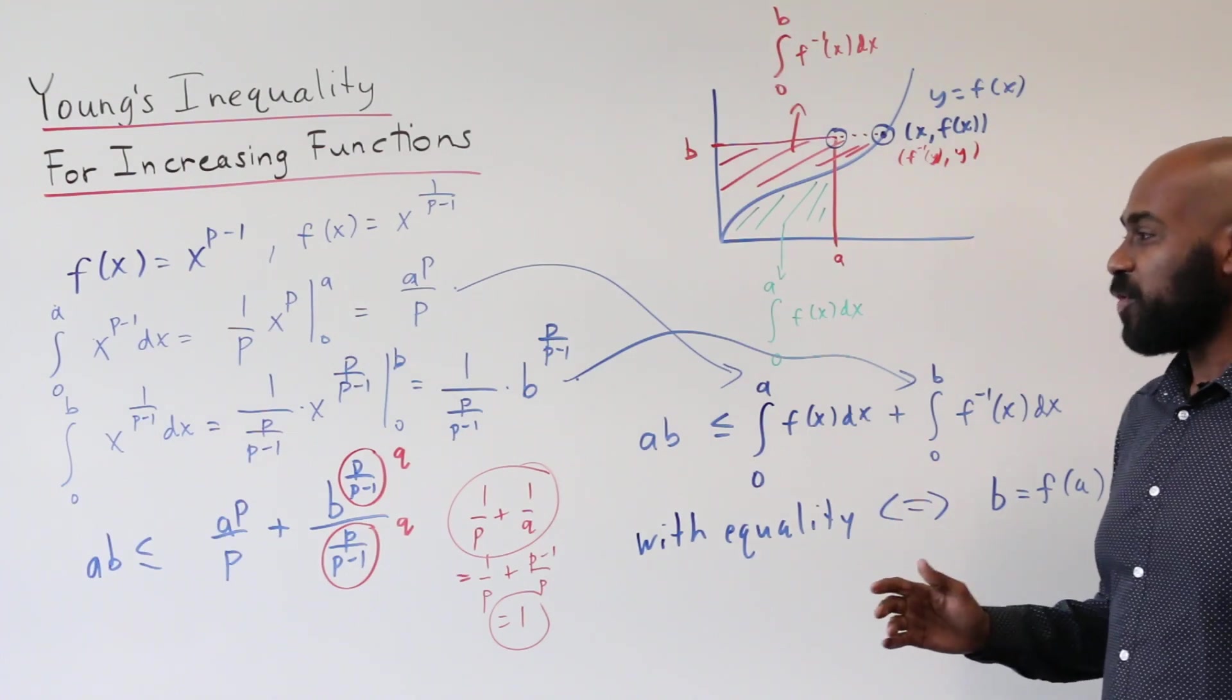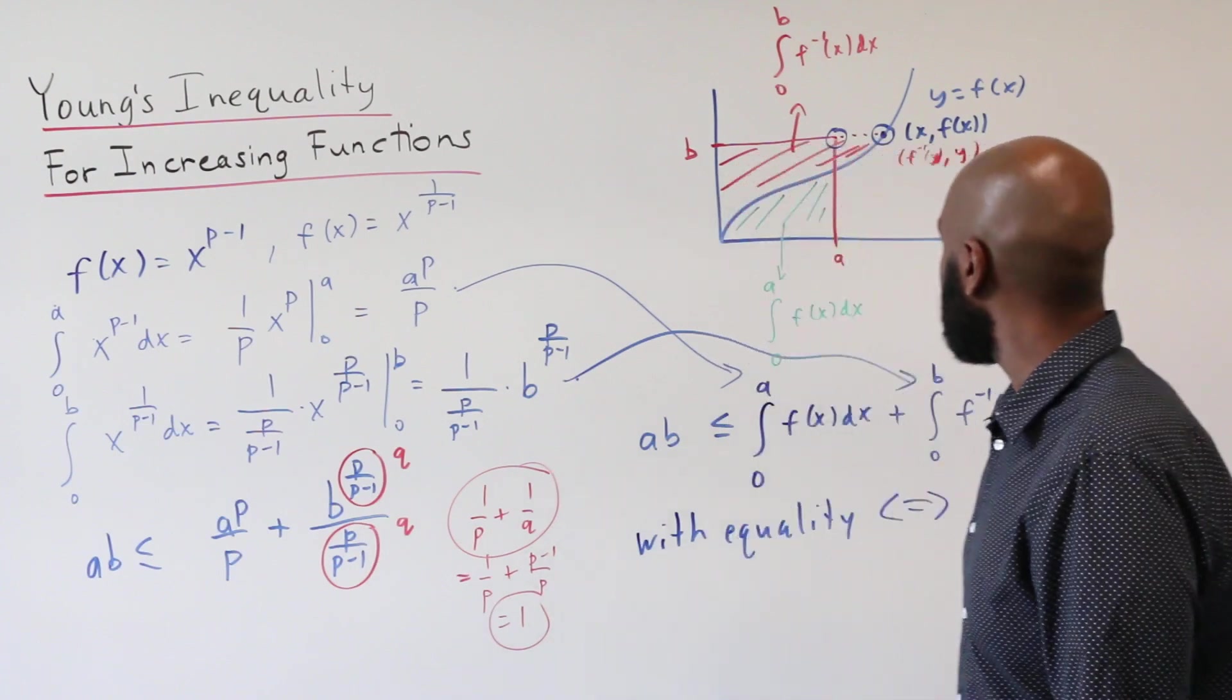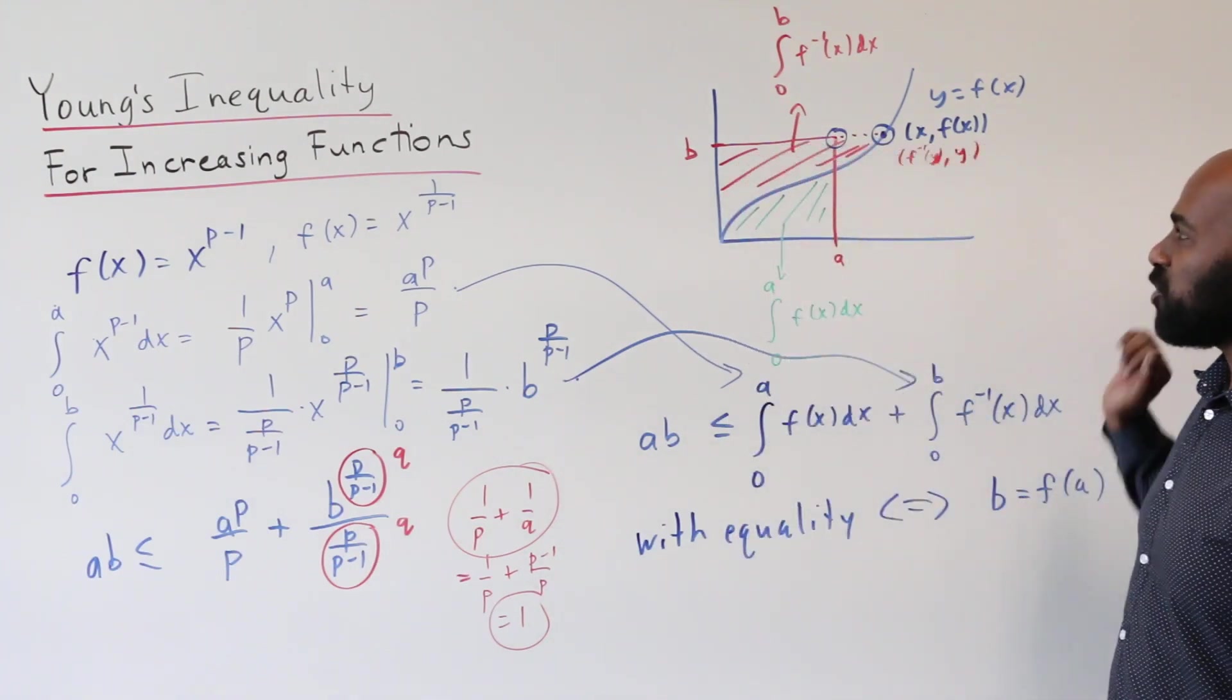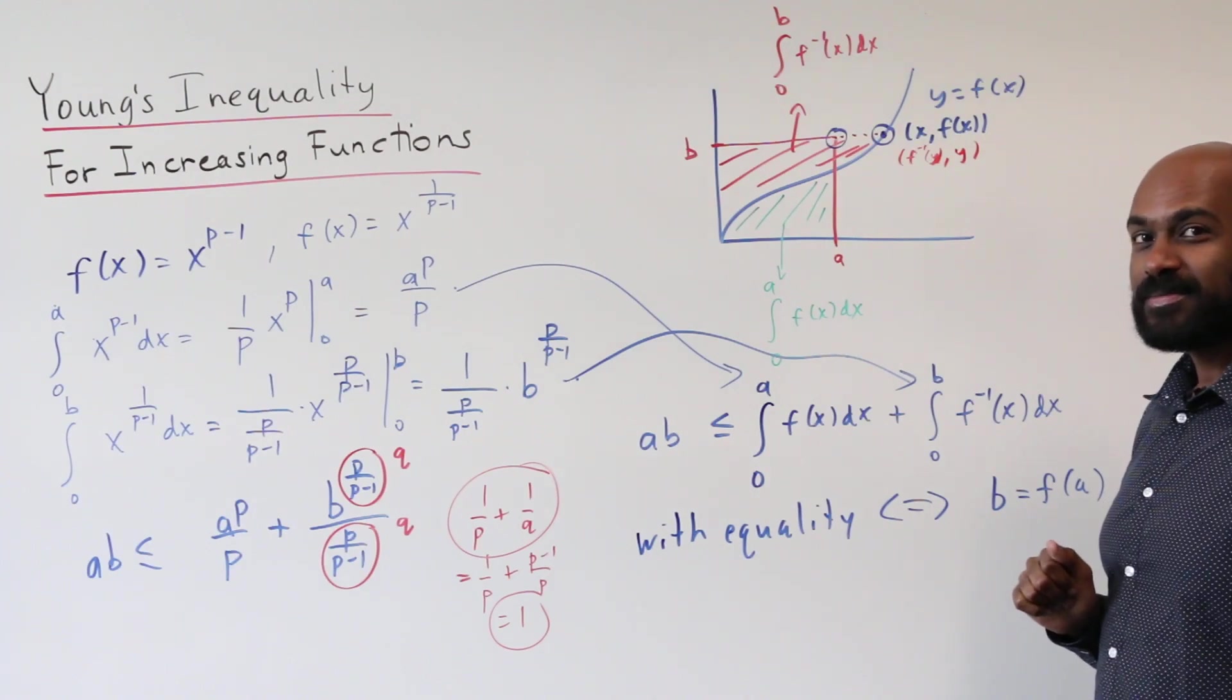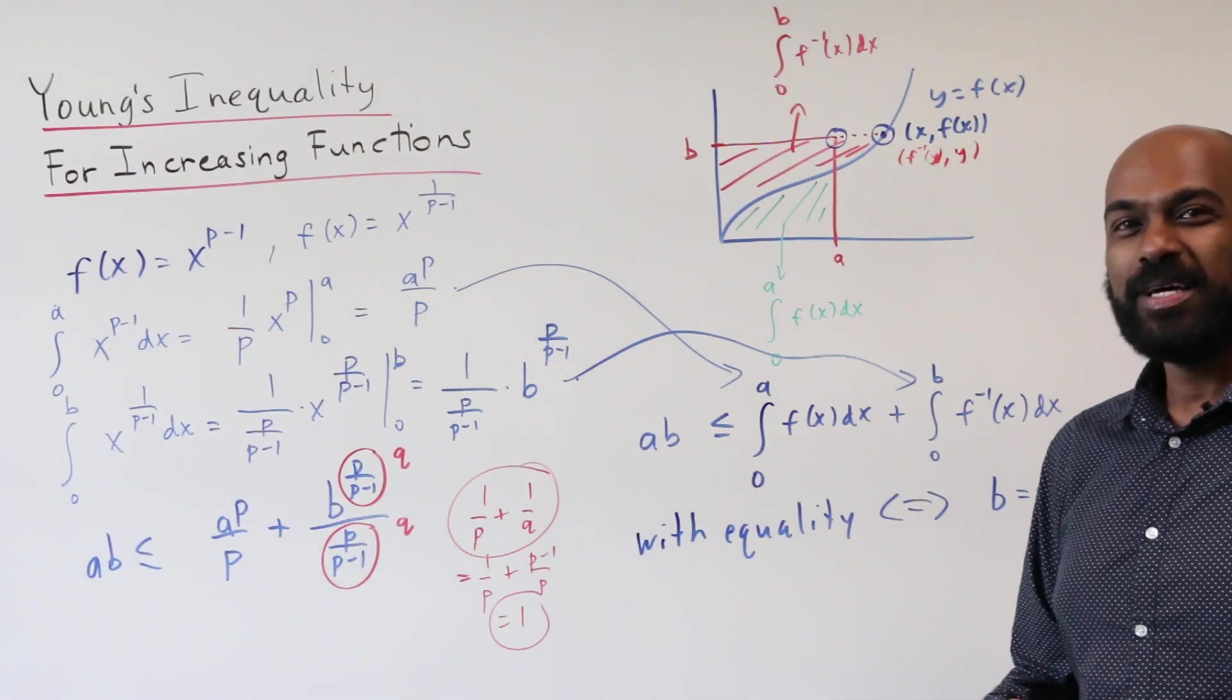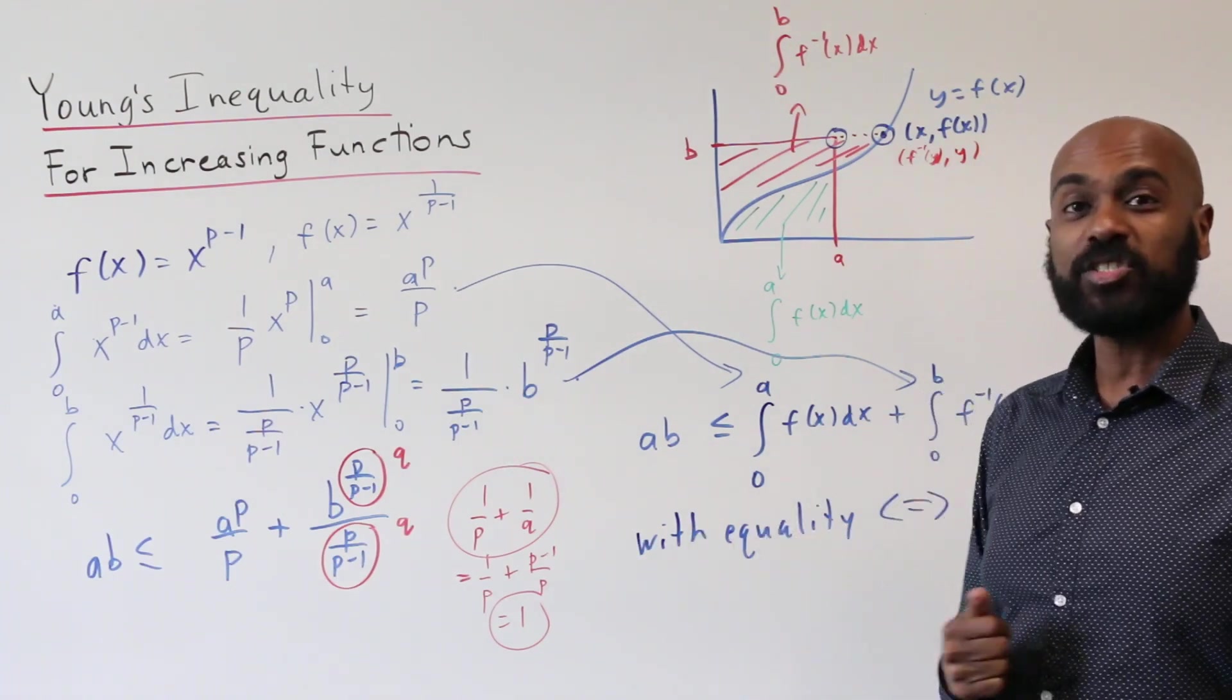So this is great. The typical proof of Young's inequality is quite algebraic. But we get it for free from this geometric interpretation using general functions f of x. So I hope you liked today's video. If you did like it, please click the like button below. And if you'd like to see more videos like this, subscribe to the channel.